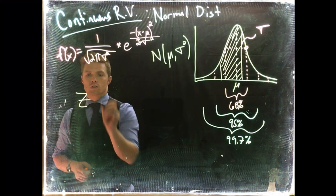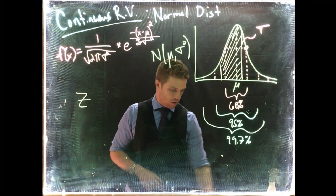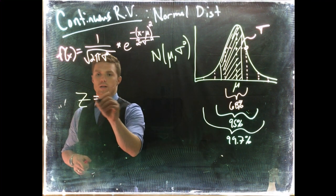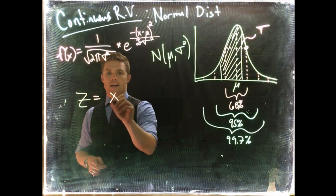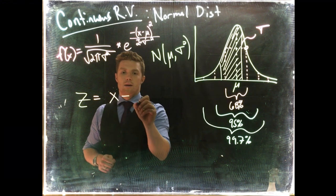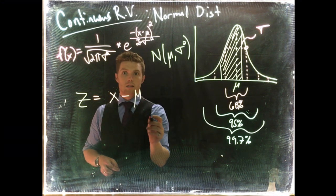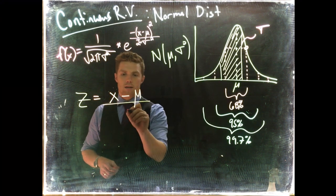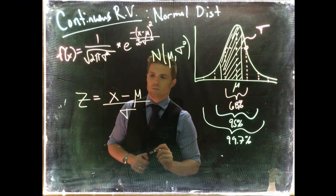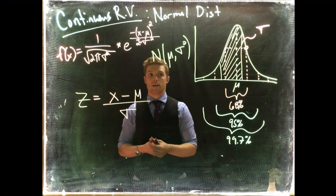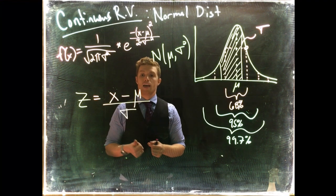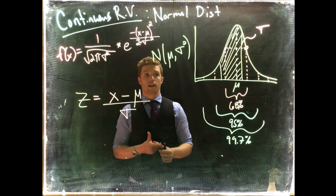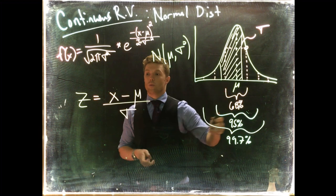This is called our z-score. The z-score is equal to x, which is our observation, minus mu or the mean of our distribution, divided by sigma. This will give us both how far away from the mean we are and also the direction - are we above the mean or are we below the mean?